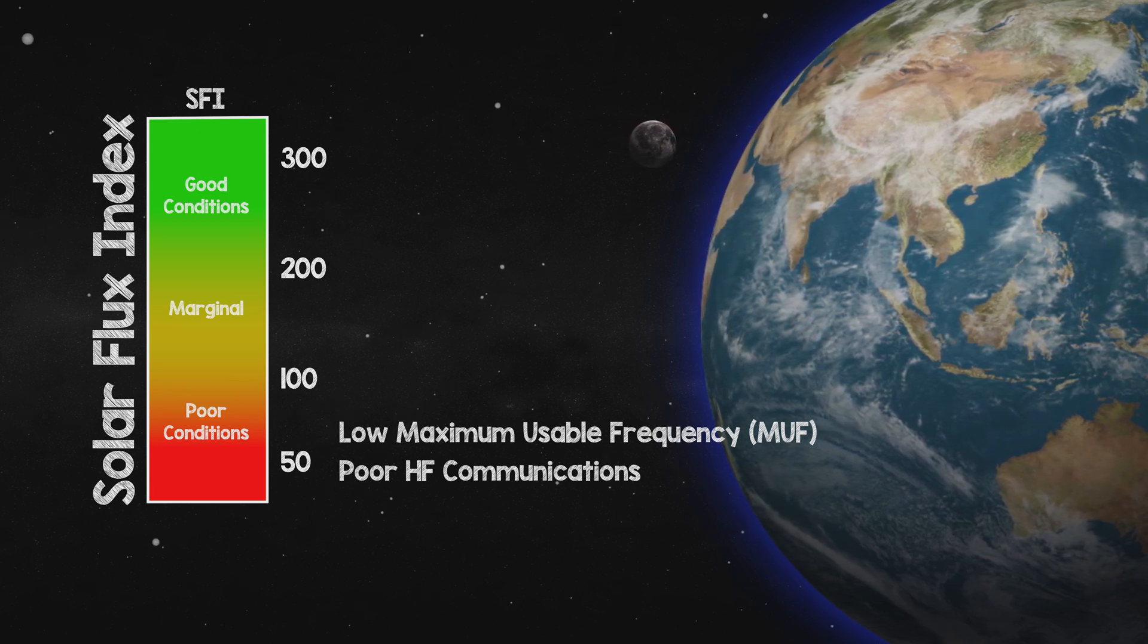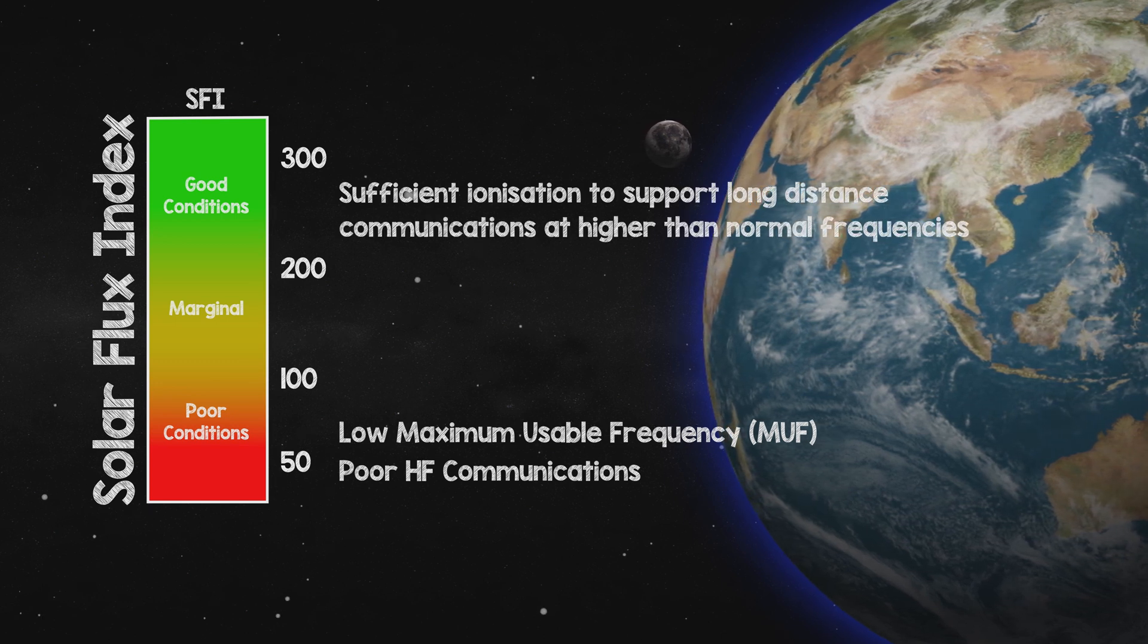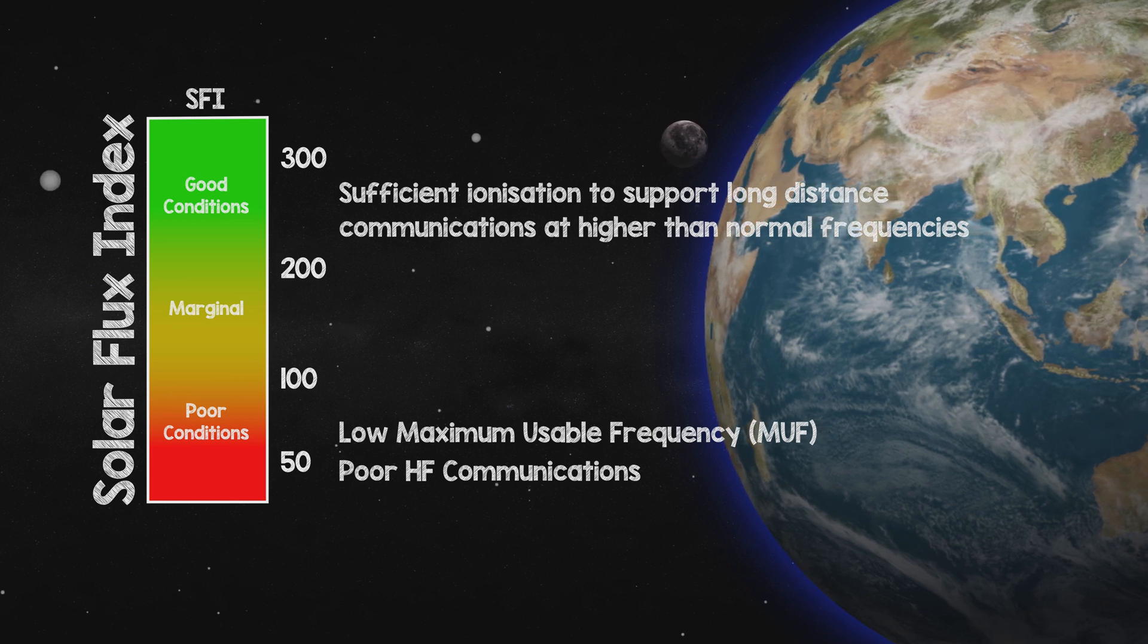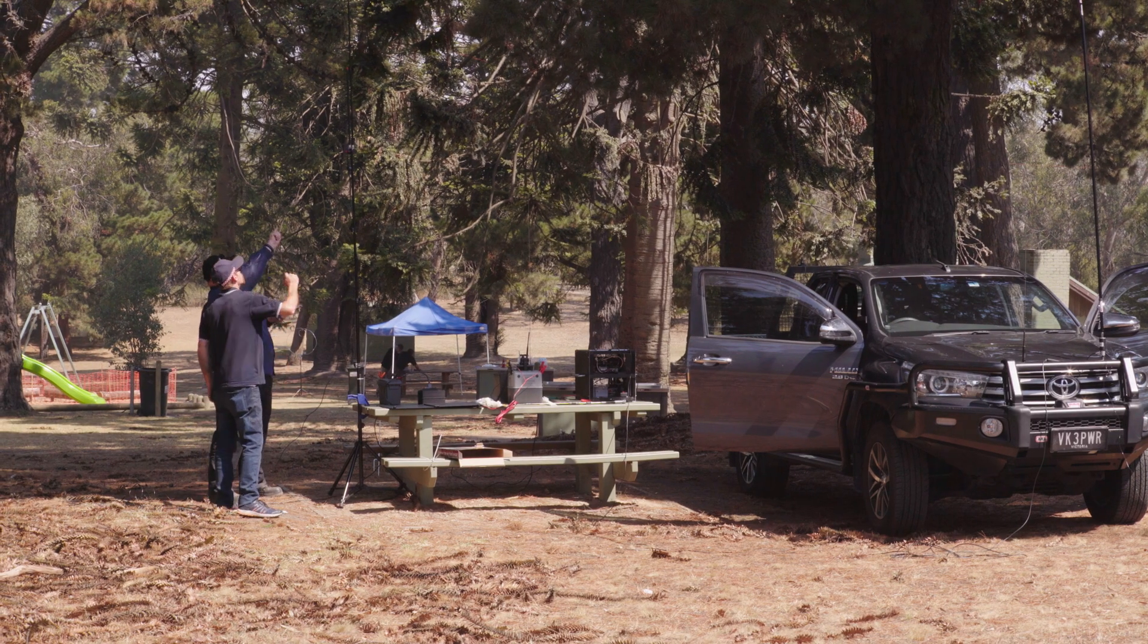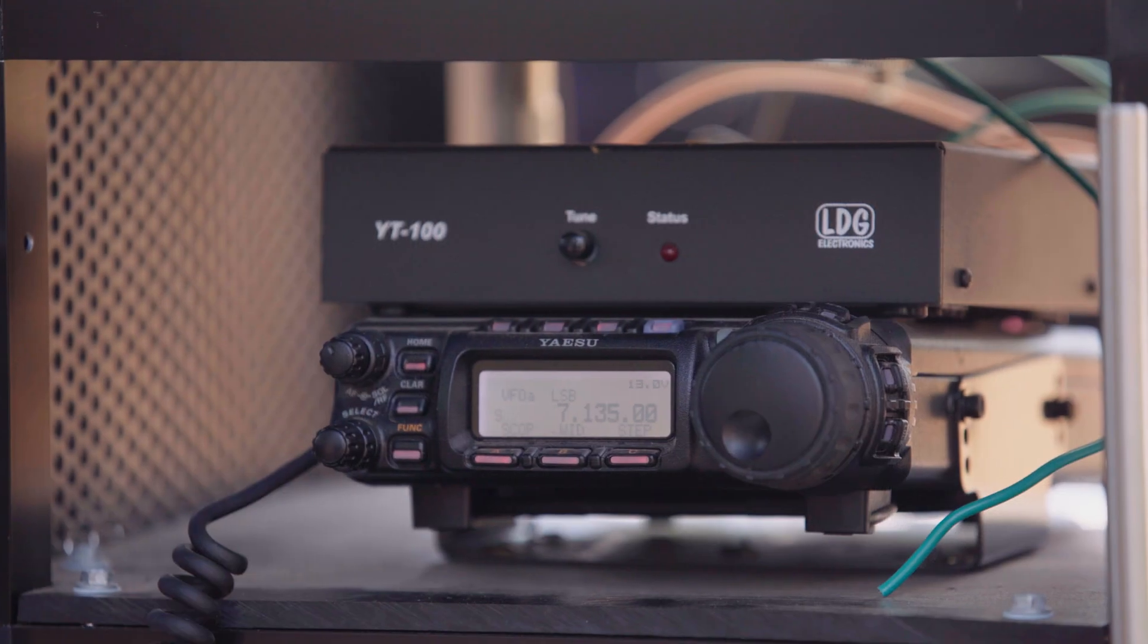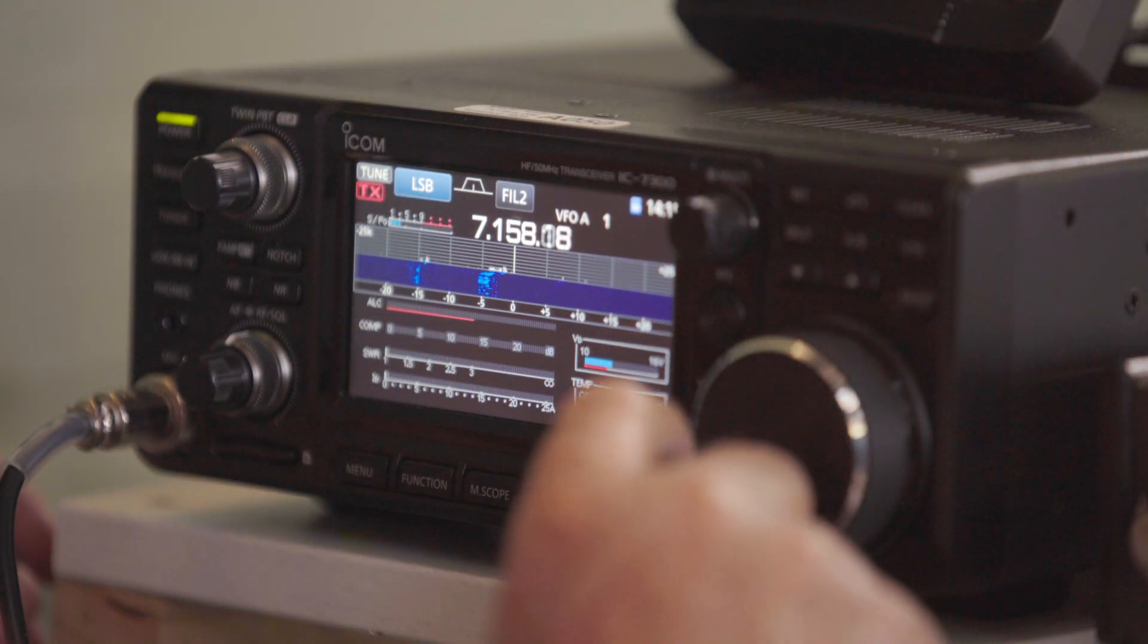Conversely, high values generally indicate there is sufficient ionisation to support long-distance communications at higher than normal frequencies. Typically, values in excess of 200 will be measured during the peak of a sunspot cycle, with high values of up to 300 being experienced for shorter periods.